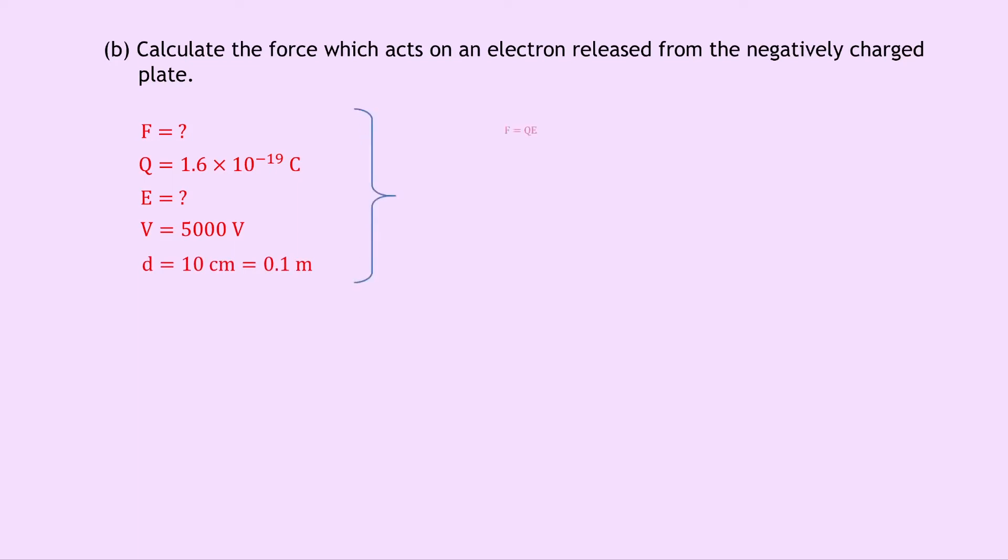So writing down our equation, we have F equals QE, and we can then rewrite this as F equals QV over D, since V equals ED, and therefore E is equal to V divided by D. So we're just replacing this E with V over D, and we can now substitute in our numbers to find what F is.